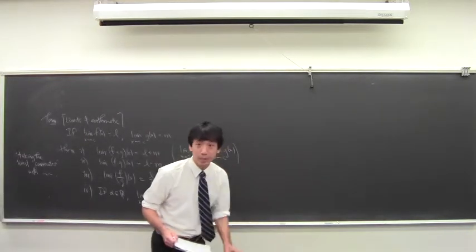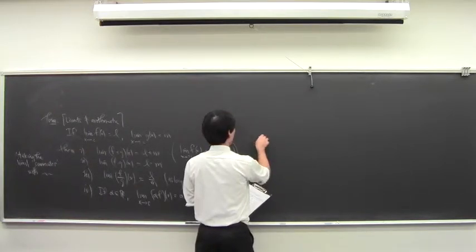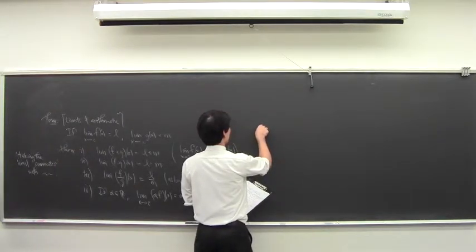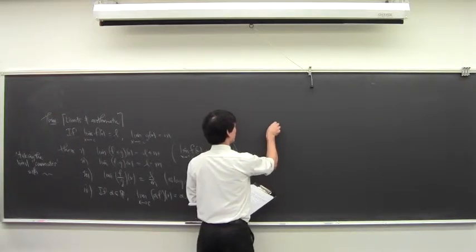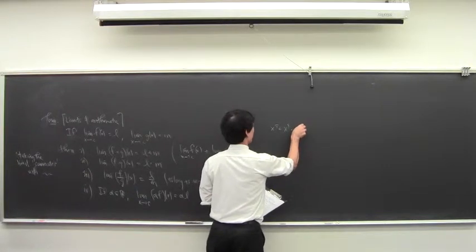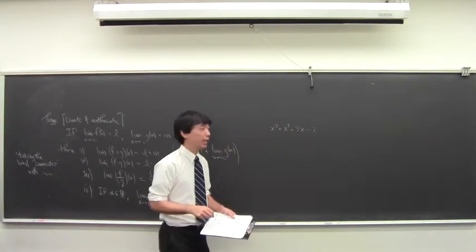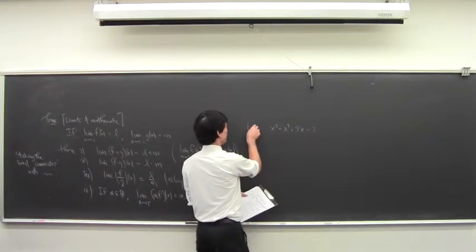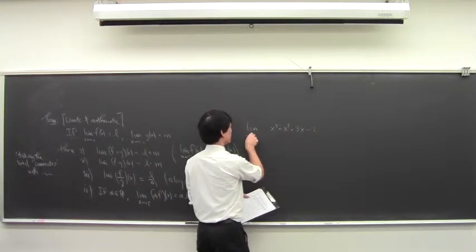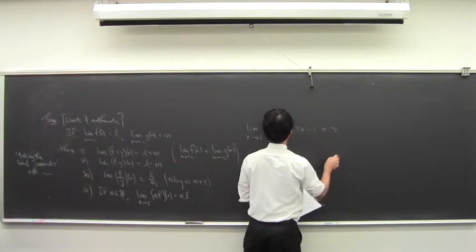You might think this is a pretty dull thing to say, but what's great about it is this. Suppose you have a polynomial — x to the fifth plus x to the fourth plus three x minus two. Somebody tells you that the limit of this as x approaches one is three.